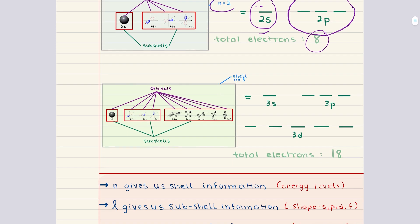When we move to the third shell, n equals three. Now we have three possible subshells because l can be equal to zero, one, or two. When l is equal to zero, we have our 3s subshell, and our ml value can only be zero, which means there's only one orbital in the 3s subshell that can hold two electrons with opposite spins. When l is equal to one, we have our 3p subshell. ML values here can be negative one, zero, or positive one — three values of ml — which means we have three orbitals in the 3p subshell.